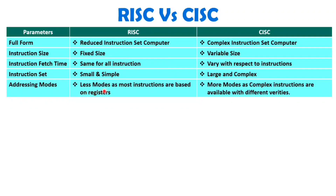Addressing modes will be fewer with RISC architecture because most instructions are based on registers only. With CISC, many addressing modes are available because CISC architecture has instructions based on registers as well as memory. When you operate with varieties of modes with respect to memory, you get many addressing modes. With RISC, we only have load and store mode with respect to memory, so fewer addressing modes are present.